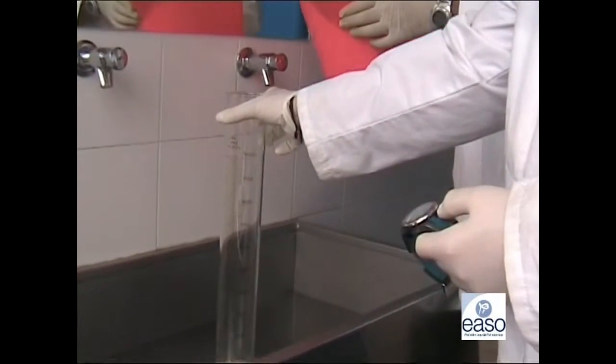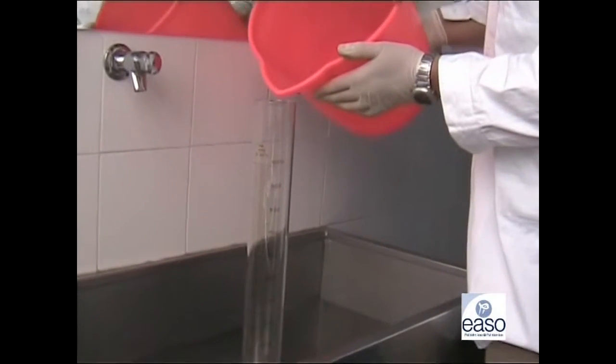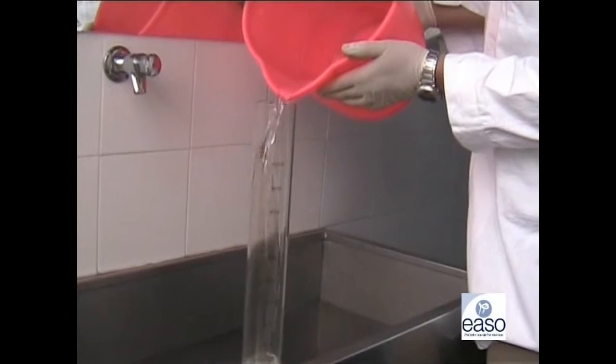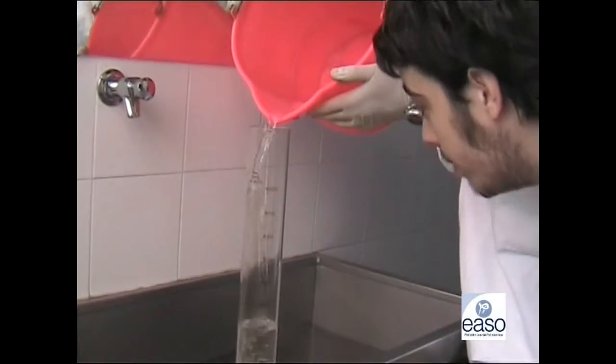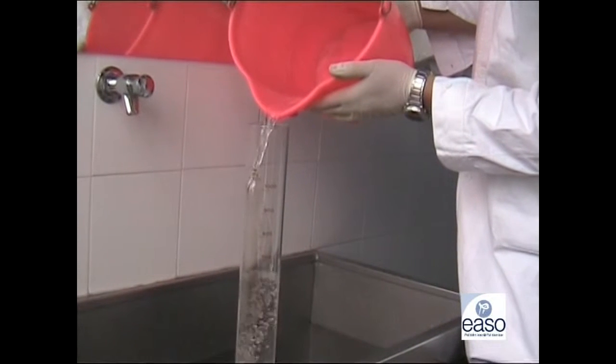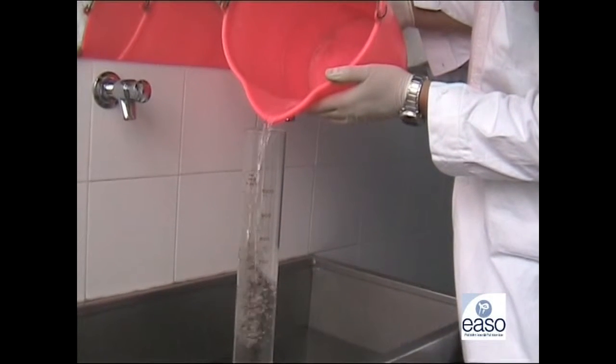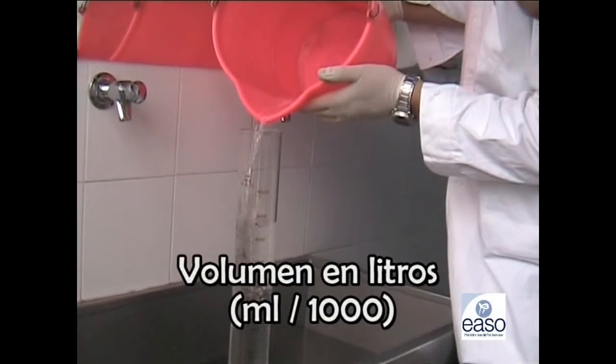El agua recogida en el cubo la traspasaremos a nuestra jarra medidora, sumando los volúmenes hasta agotar el agua del cubo. De esta manera conoceremos el volumen vertido. Este volumen lo expresaremos en litros, para lo cual dividiremos la cantidad de mililitros o centímetros cúbicos entre mil.